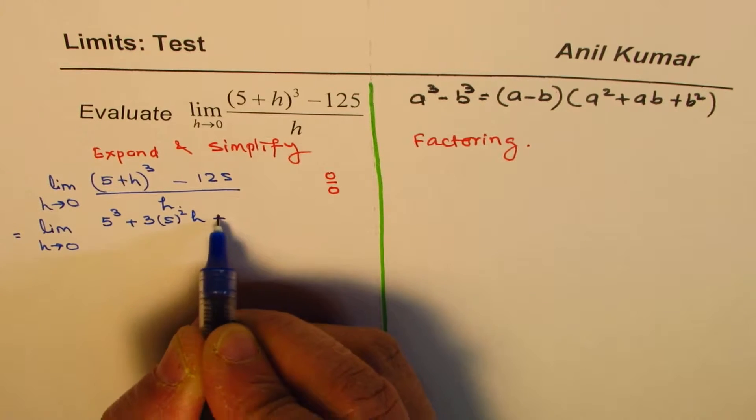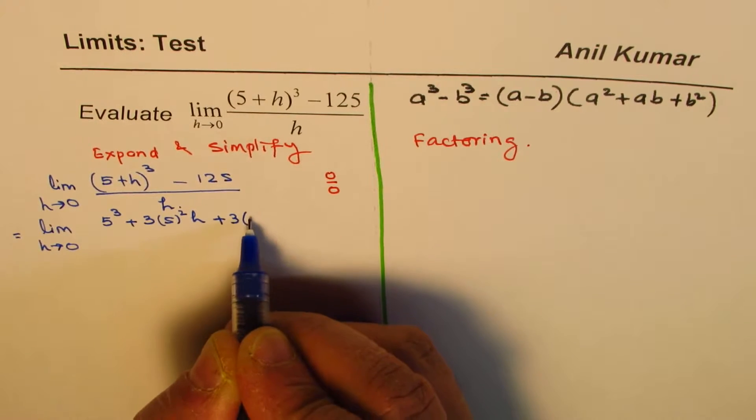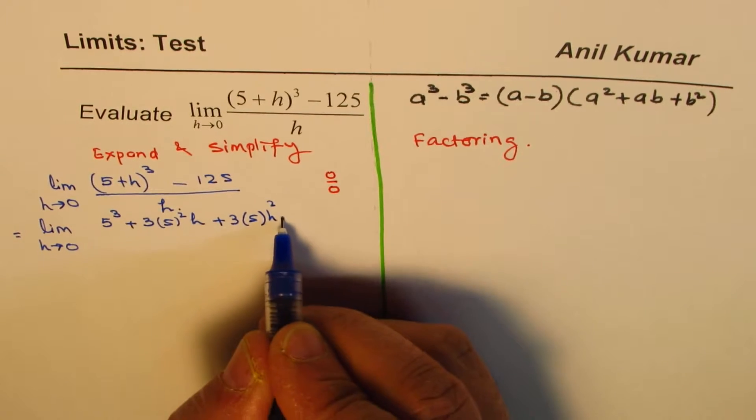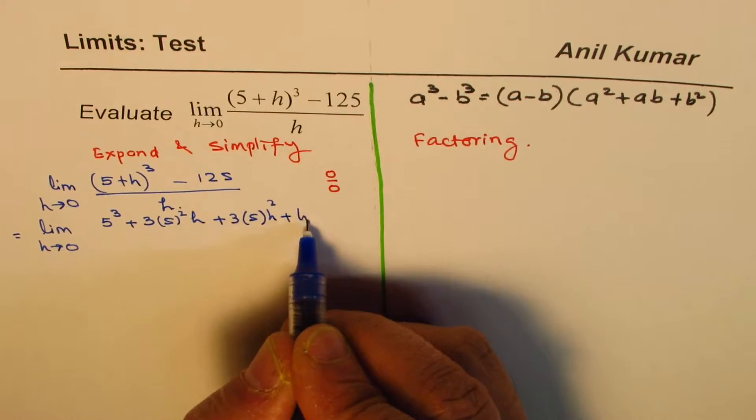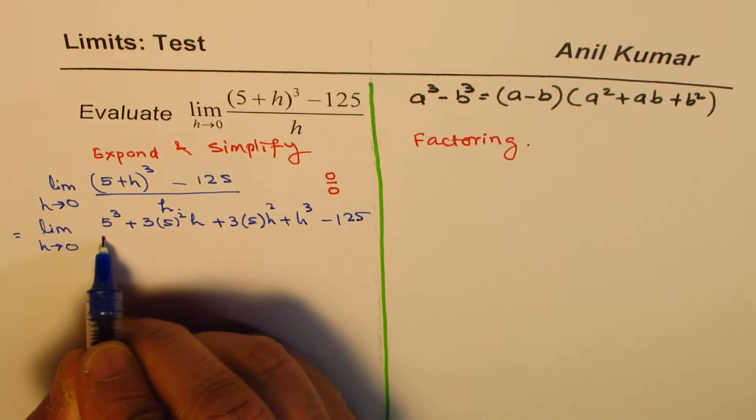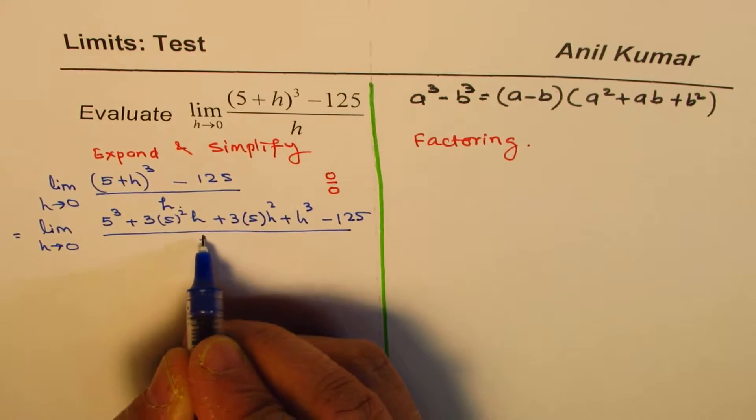3a square b, which is h, plus 3ab square, right, plus b cube, which is h cube, right, minus 125. So, we have expanded, and now we will try to simplify.